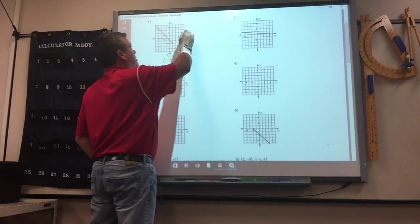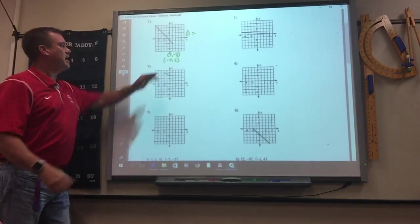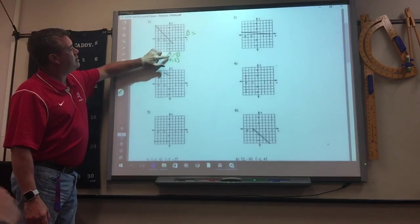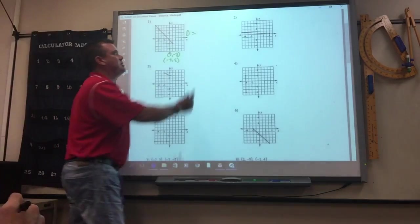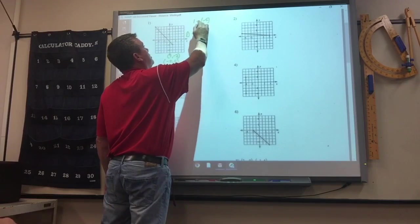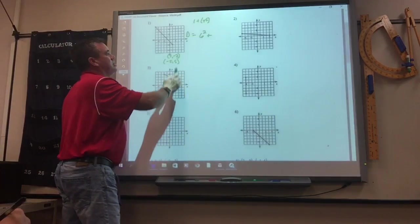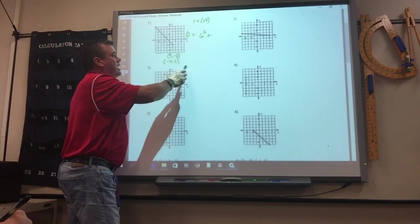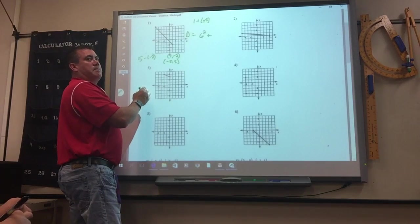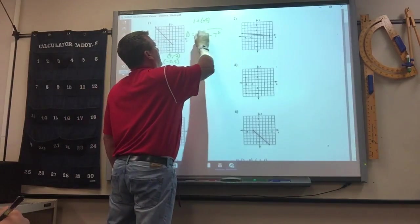So the distance formula is x minus x, and remember it doesn't matter what order you subtract them in. I always try to keep them positive. So 1 take away negative 5 is? 6 squared plus, I'll just do it this way so I don't get a negative. 5 take away negative 2 is 7, because remember negatives cancel. And then square root it.